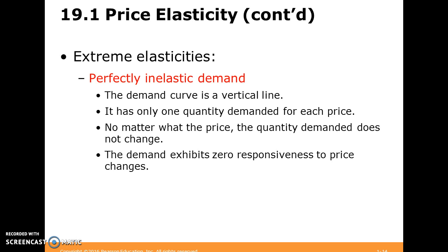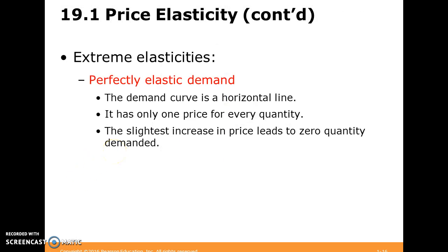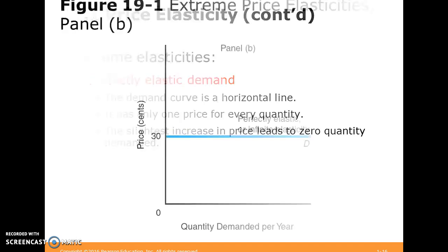Now let's talk about the extreme cases. If we have perfectly inelastic demand, we have a vertical line — there's only one quantity demanded regardless of price, and no matter what the price is, quantity demanded will not change. Elasticity equals zero; the demand exhibits zero responsiveness to change. On the other hand, perfectly elastic demand has a horizontal demand curve — there's only one price for every quantity, and any slight increase in price will lead to no one buying anything.